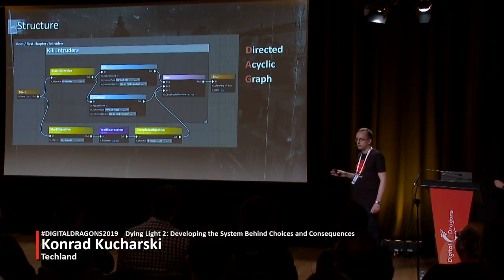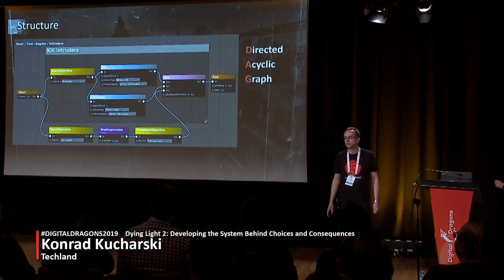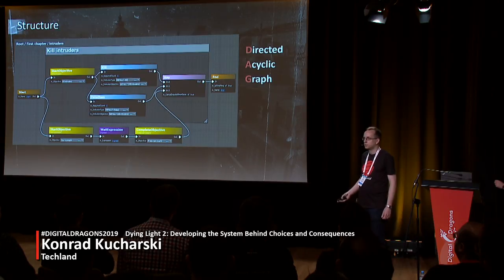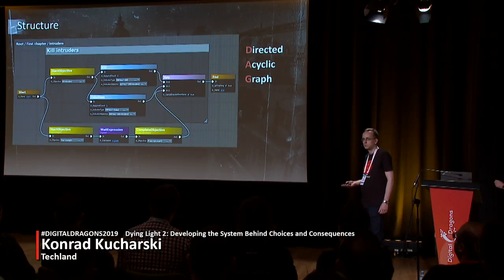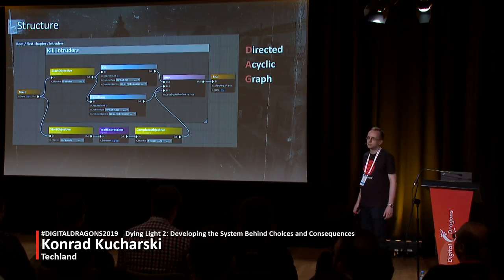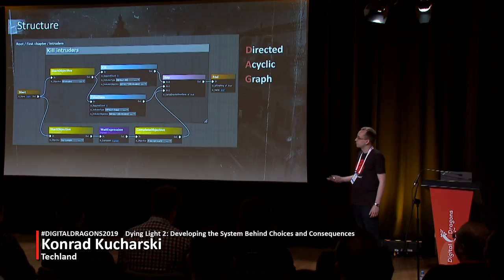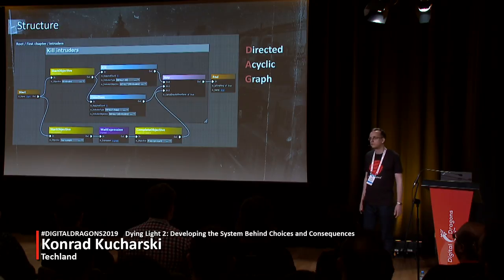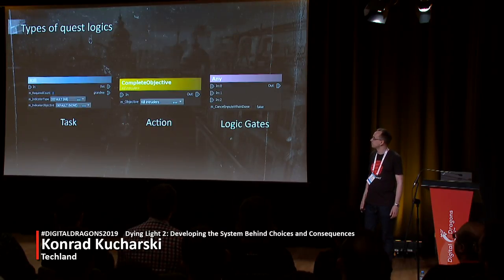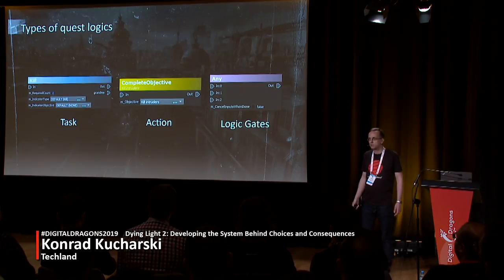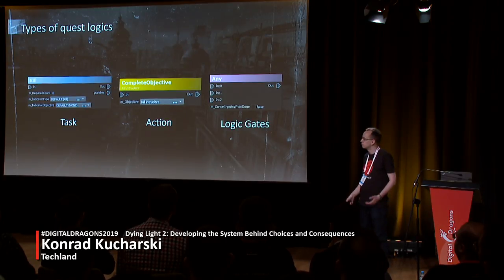For some time we thought about cycles in graphs and definitely wanted at least replayable parts of quests. But after some time we decided that cycles would be too problematic to handle properly, especially in the co-op game. So instead we decided to create a directed acyclic graph. An important thing here is that we don't use any additional scripting languages — that graph is everything we have. Our main building blocks are called quest logics, previously called phases, so I might use both names.